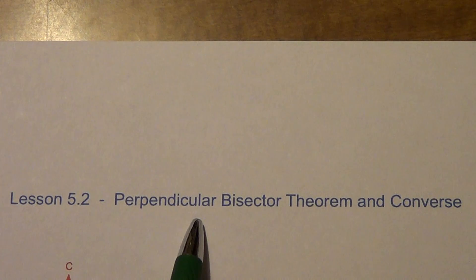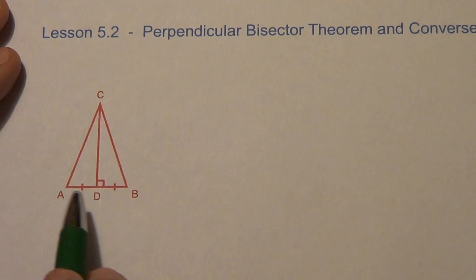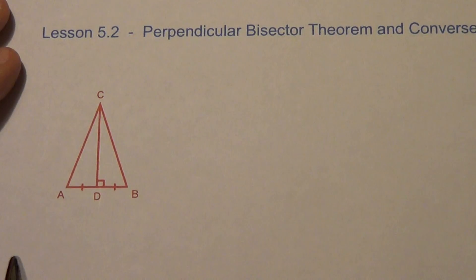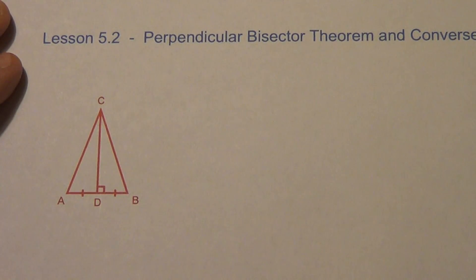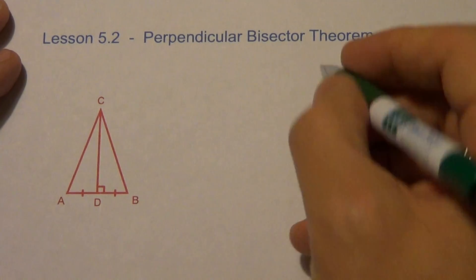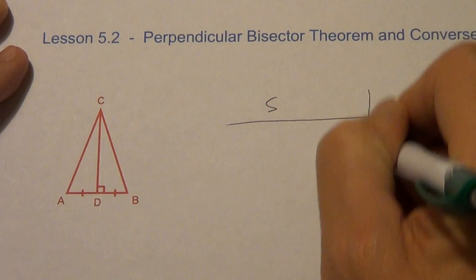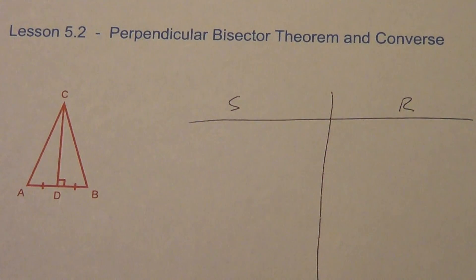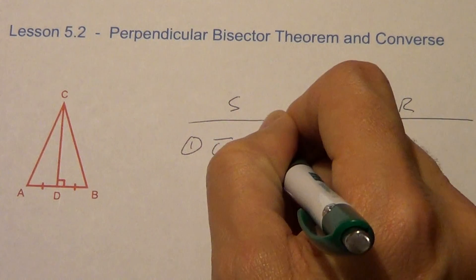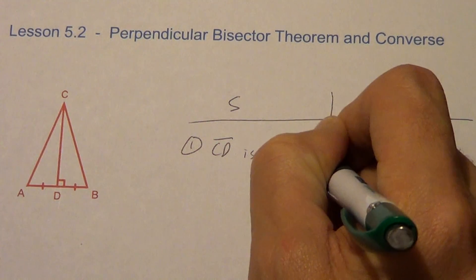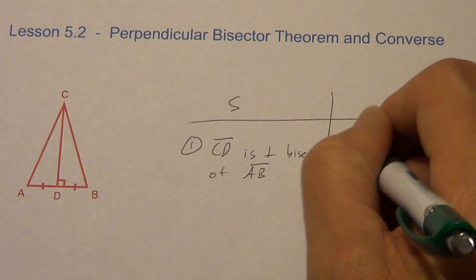I'm actually going to prove that this theorem works. CD is the perpendicular bisector of segment AB — that would be the given, it's marked up in the picture. So starting the proof: statement number one is that CD is the perpendicular bisector of AB, and that's my given.